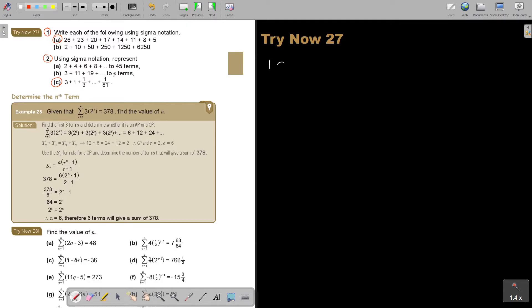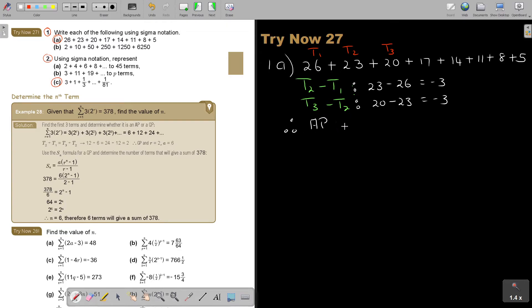Okay. Let's start with number 1A. 26 plus 23 plus 20 plus 17 plus 14 plus 11 plus 8 plus 5. So I can already see they subtract 3 every time. But you can test it by saying T2 minus T1, T3 minus T2. This is T1, T2, T3. So it's going to give me 23 minus 26, that's negative 3. And 20 minus 23, that's negative 3. So therefore, AP and the value of D is equal to negative 3. And the value of A is 26.